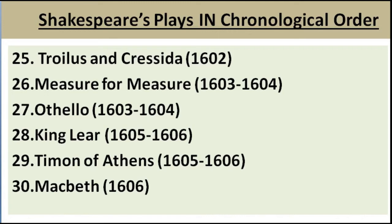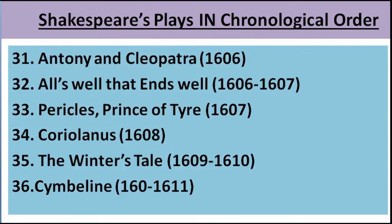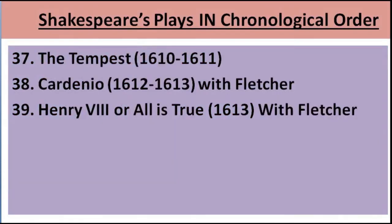A key fact: Macbeth is the shortest tragedy written by William Shakespeare, while Hamlet was the longest one. Moving to the 31st play, Antony and Cleopatra, written in the year 1606. After that, All's Well That Ends Well, written in the year 1606 to 1607. After that, Pericles, Prince of Tyre, written in the year 1607. After that, Coriolanus, 1608. The 35th, The Winter's Tale, 1609 to 1610. The 36th, Cymbeline, written in the year 1610 to 1611. The 37th play was The Tempest, written in the year 1610 to 1611.